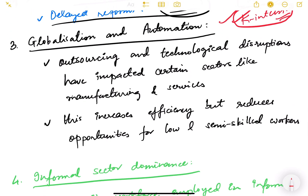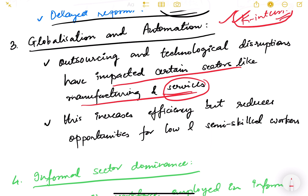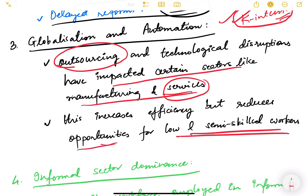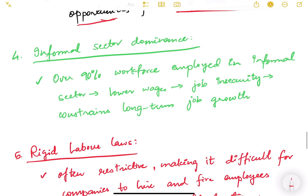The next challenge is globalization and automation. Outsourcing and technological disruptions have impacted sectors like manufacturing and services. A lot of things are also outsourced to other countries. This increases efficiency but reduces opportunities for low- and semi-skilled workers, making it an important challenge for job creation.